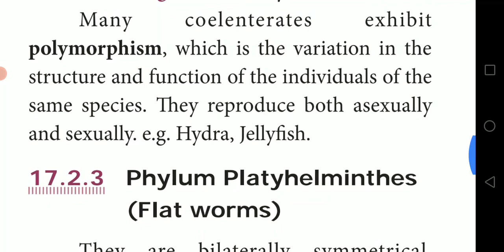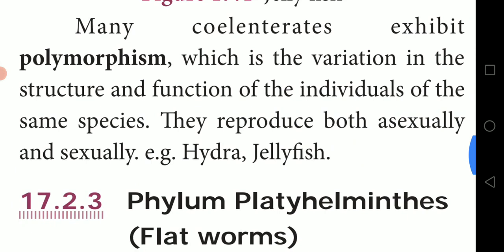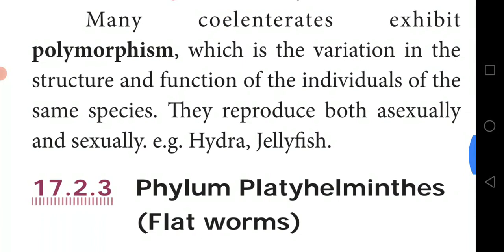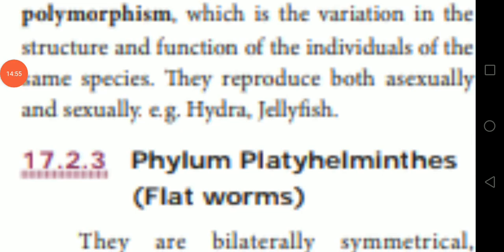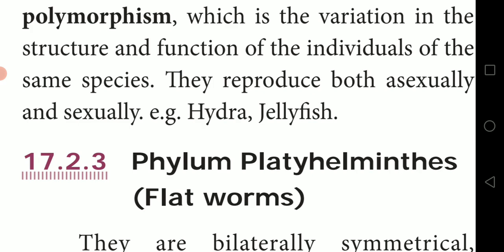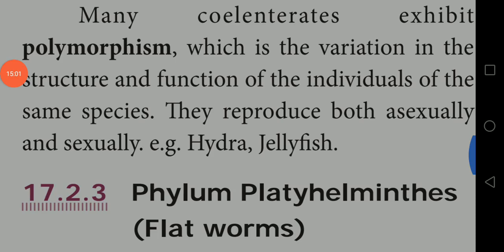Many coelenterates exhibit polymorphism, which means variations in the structure and functions of individuals of the same species. They reproduce both asexually and sexually. Examples include Hydra and jellyfish.